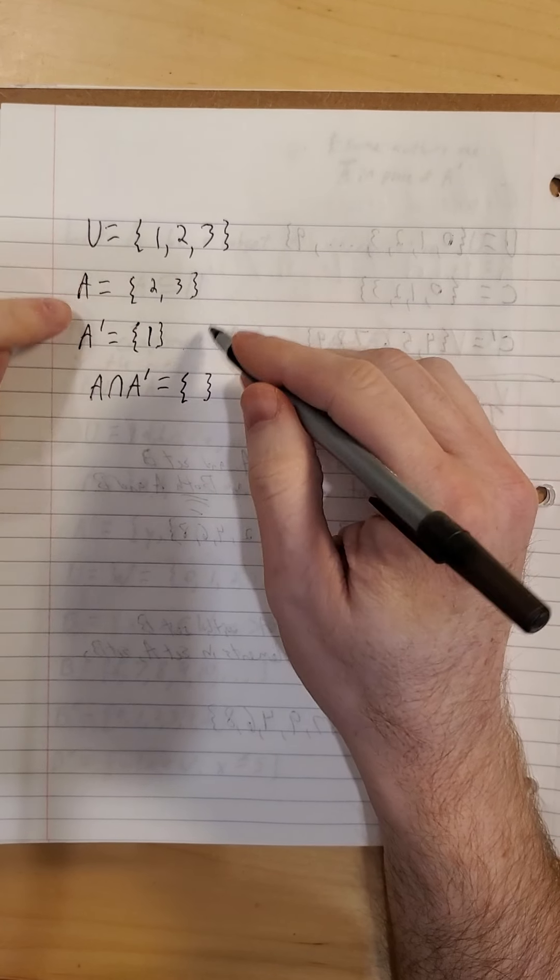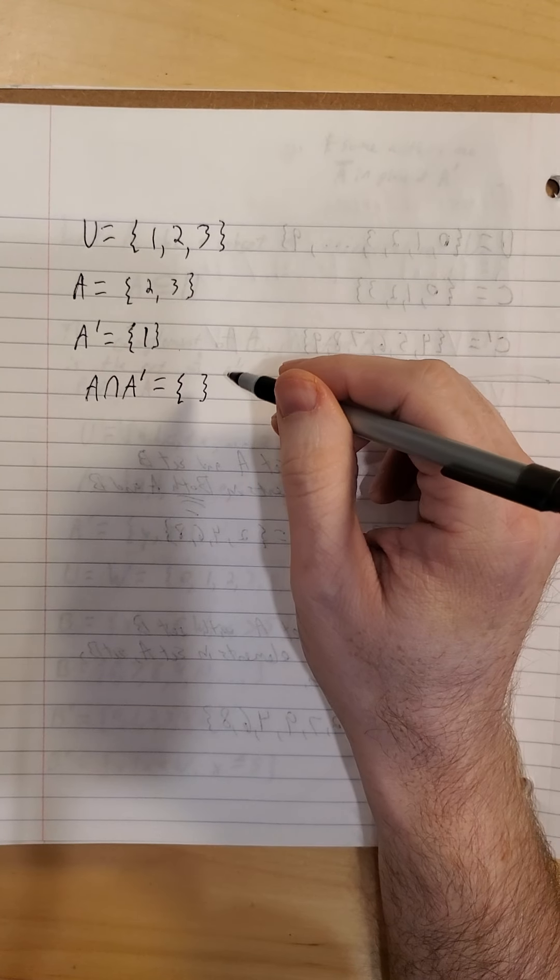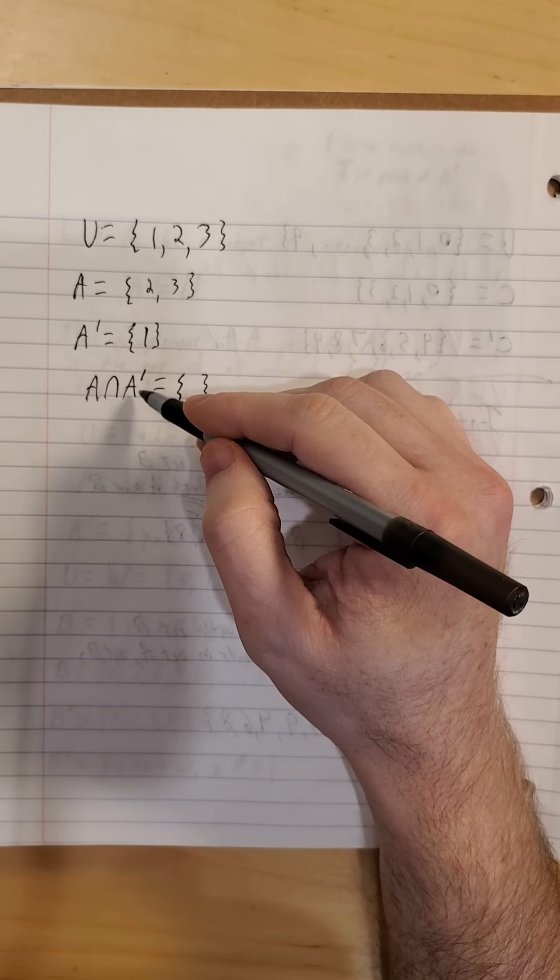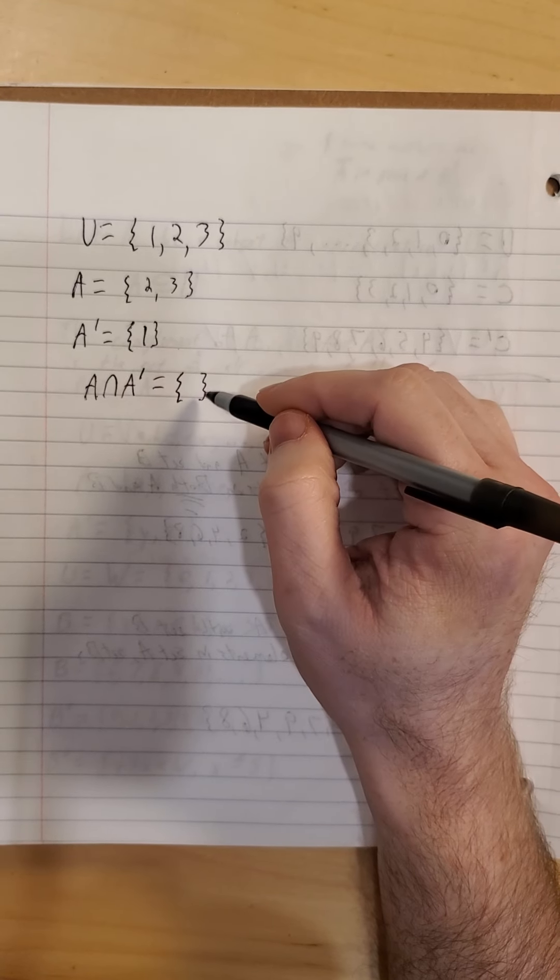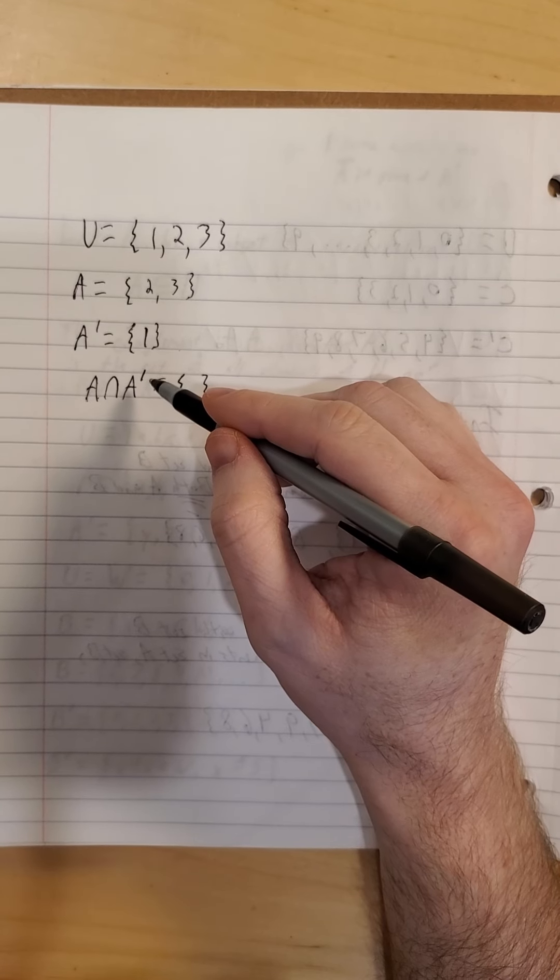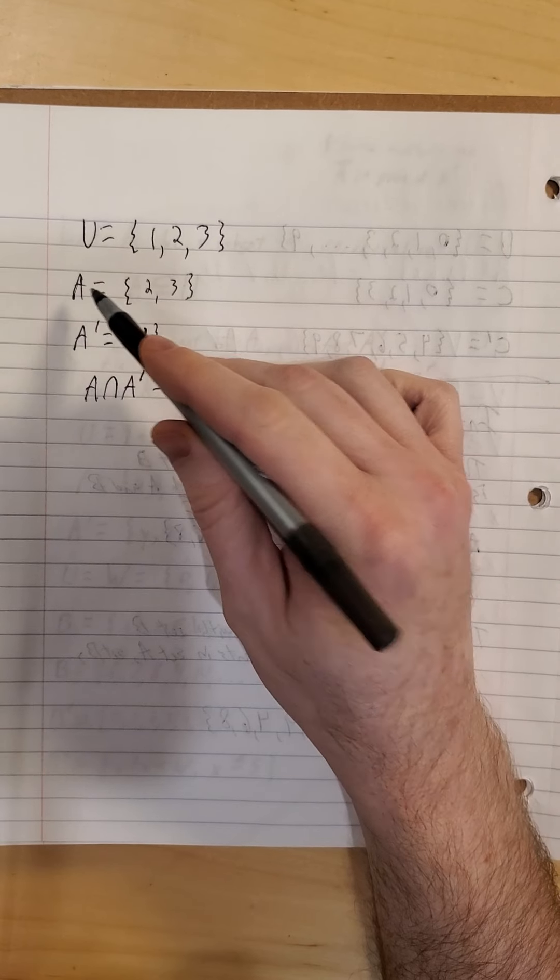But that's not anything really all that special about this small example. That will happen in general for any set with its complement. The intersection of a set and its complement has to be empty based on how we define the complement. The complement is everything in the universal set, but the stuff in A.